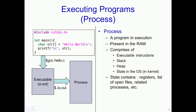To define it formally, a process is a program under execution which is executed from RAM and essentially comprises of various sections such as the executable instruction, stack, heap, and also a hidden section known as the state. This state is actually maintained by the operating system and contains various things like the registers, list of open files, a list of related processes, et cetera.